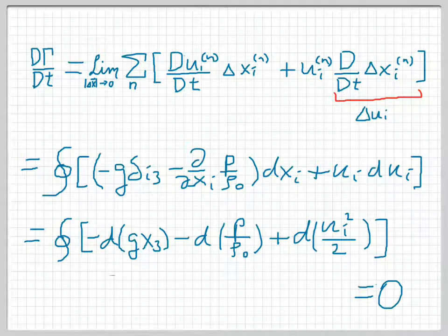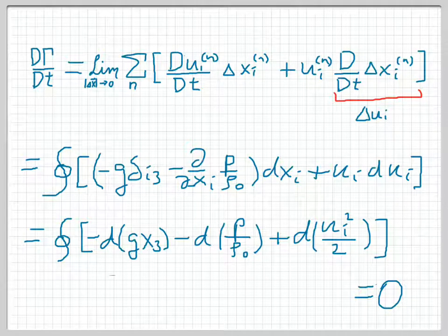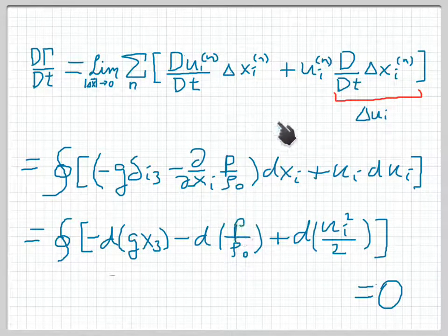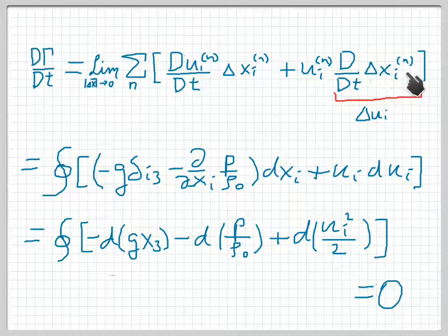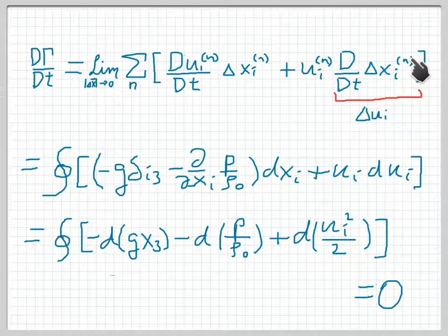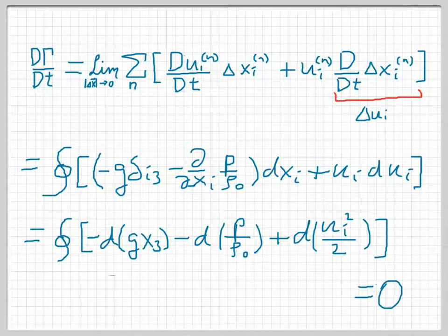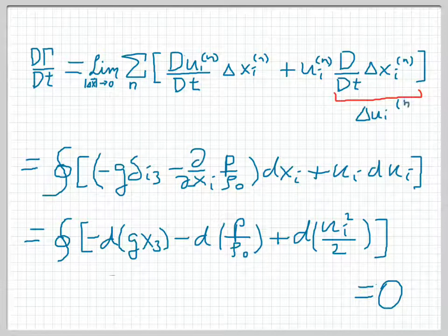And then we realize that the first term is the same, but the second term, the material derivative of Δx is just Δu. So d by dt of Δxi, number n, is just Δui⁽ⁿ⁾.